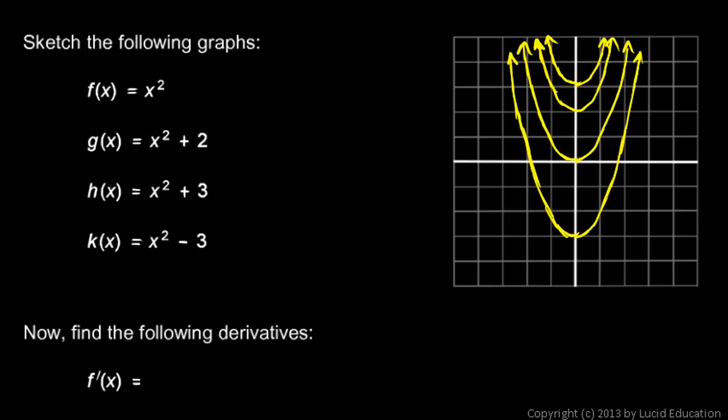So just some rough sketches there of those functions. They're all alike, just vertical shifts of an x² function. Now we're told to find the following derivatives. For each of these functions,